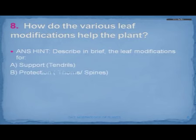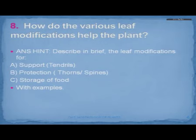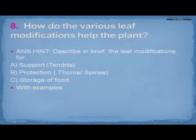The last question was: how do the various leaf modifications help the plant? Just as you wrote about stem modifications, here you should describe in brief the leaf modifications for support — that is tendrils — for protection in the form of thorns or spines, and for storage of food. Do not forget to give examples with each of these descriptions.